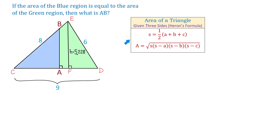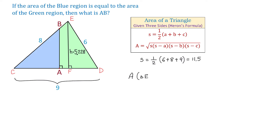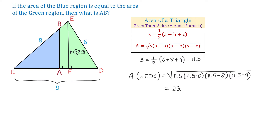With Heron's formula, given a triangle with three sides, we can find the area using the formula: square root of S times (S minus A) times (S minus B) times (S minus C), where S is one half of (A plus B plus C). So again S equals one half times (6 plus 8 plus 9), which is 11.5. The area of triangle EDC equals the square root of 11.5 times (11.5 minus 6) times (11.5 minus 8) times (11.5 minus 9), which is approximately 23.525.